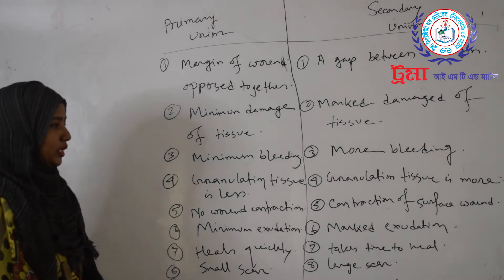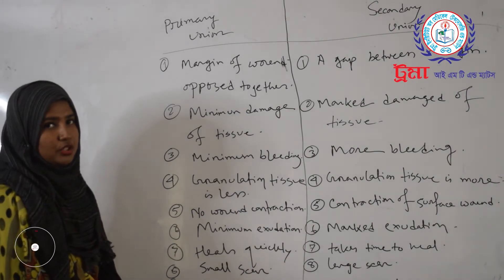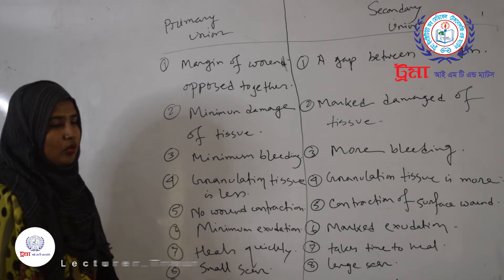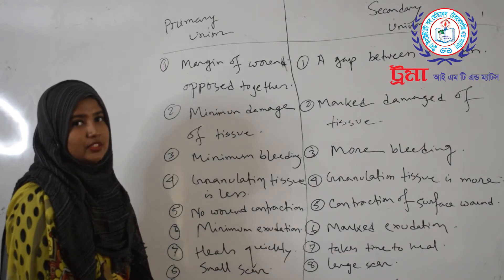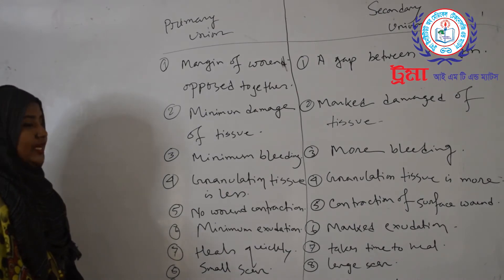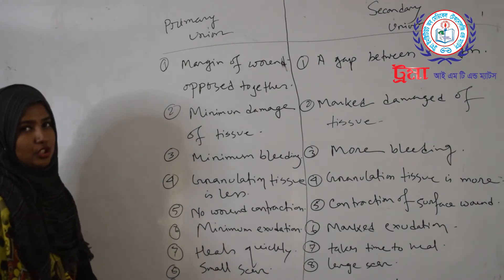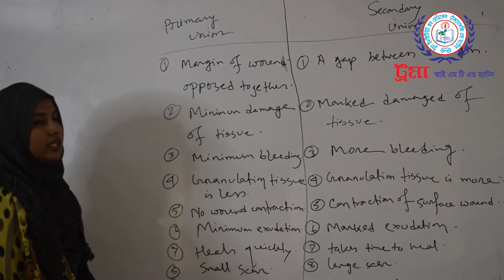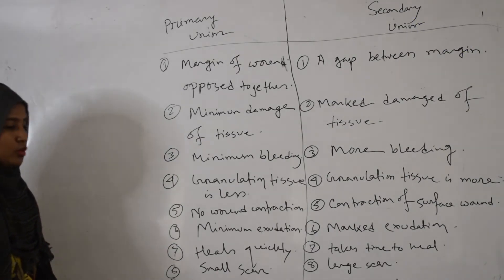In primary union, granulation tissue is less; in secondary union, granulation tissue is more. Primary union has no significant contraction; secondary union involves contraction of the wound surface. Primary union has minimum exudation; secondary union has marked exudation. Primary union heals quickly; secondary union takes more time to heal. The scar in primary union is small; in secondary union it is large.